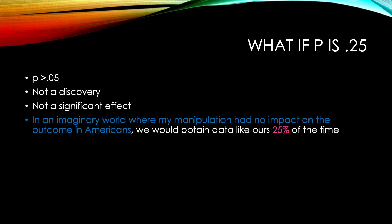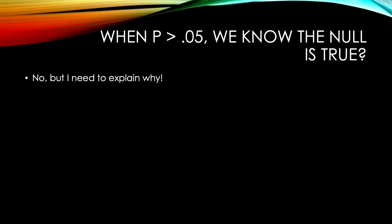Here's another problem. Your p is 0.25 — p is greater than 0.05. This is not a discovery; this is not a significant effect. In an imaginary world where my manipulation had no impact on the outcome in Americans, we would obtain data like ours 25% of the time. In an imaginary world where the null hypothesis is true, we would obtain data like ours 25% of the time. With this result, we are not confident that the null is false. We have not disproven the null. The p-value is too high.